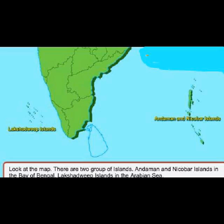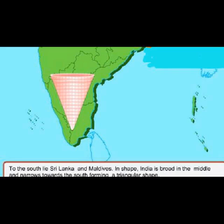There are 2 groups of islands: Andaman and Nicobar Island in the Bay of Bengal, and Lakshadweep Island in the Arabian Sea. To the south lie Sri Lanka and Maldives. India is broad in the middle and narrows towards the south, forming a triangular shape.